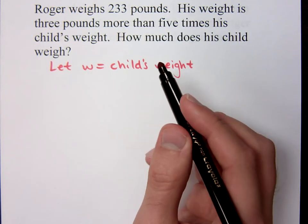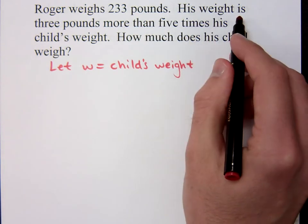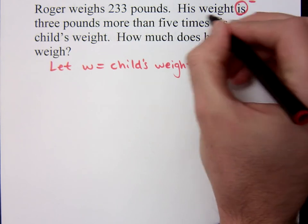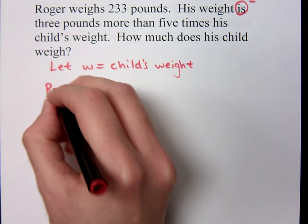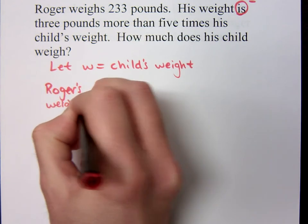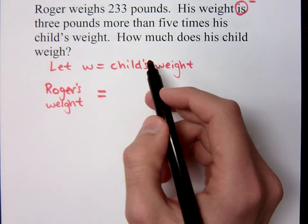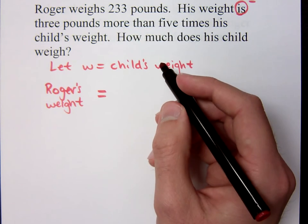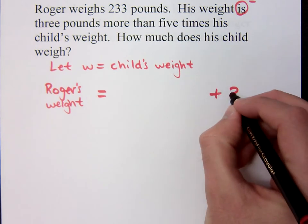Now, what I want to do here is kind of help us think about what all this means. It says his weight is. So this, to me, sounds like it could be an equal sign, right? When it says his weight, who are we talking about? So we know that Roger's weight is or equals what? Three pounds more than. What does it mean to be three pounds more than? Or adding three to something, right? So that means at the end, we're adding three to something.